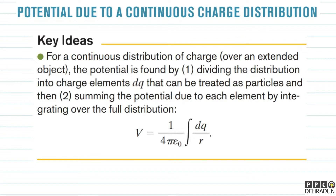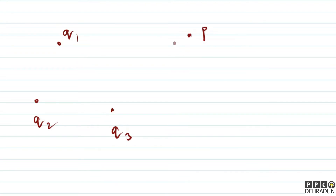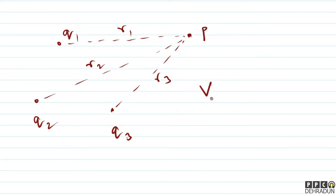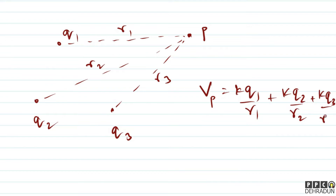In this lecture, we are going to see the potential due to a continuous charge distribution for the first time. So far we have studied discrete charge particle systems — the potential at point P is kQ1/R1 + kQ2/R2 + kQ3/R3. That is how we find the potential at a point P when discrete charges are present.